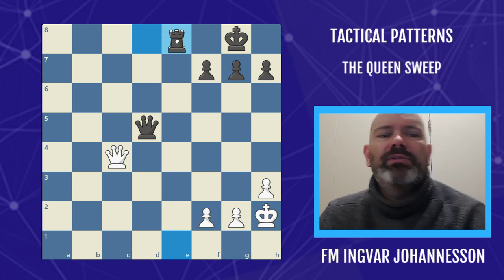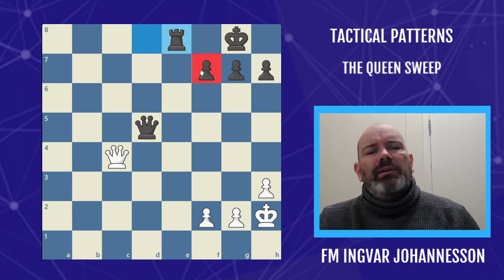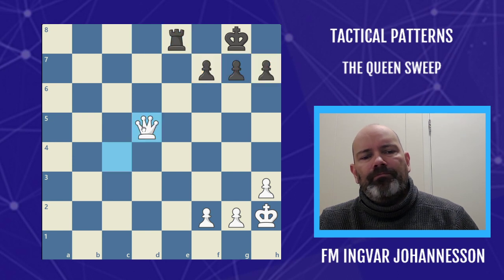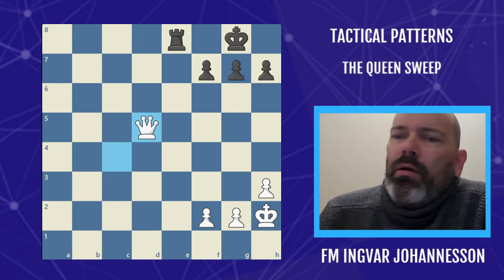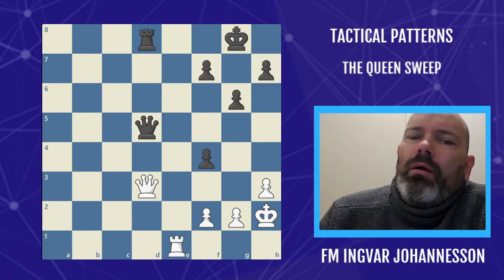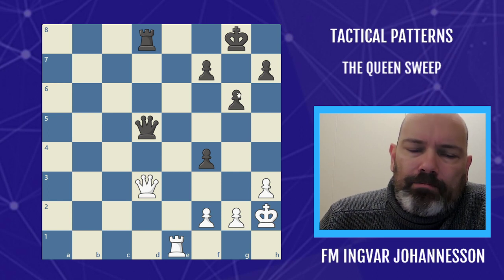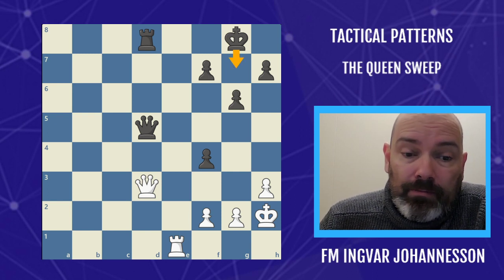This is a case where the King can't run anywhere, so you have to take the rook and you just lose the Queen. We also can have a case where black can actually run with the King.